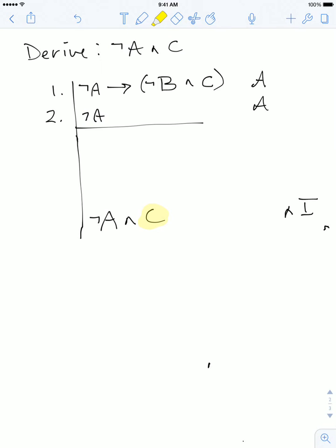So the very step before we write down ¬A ∧ C has to be that we have the sentence C on a line by itself.